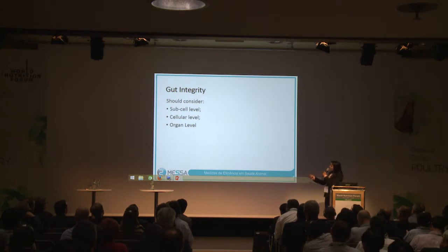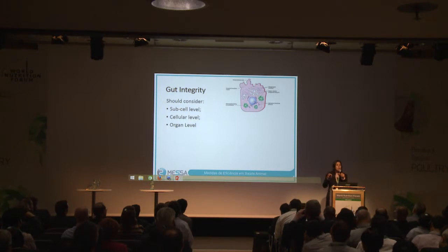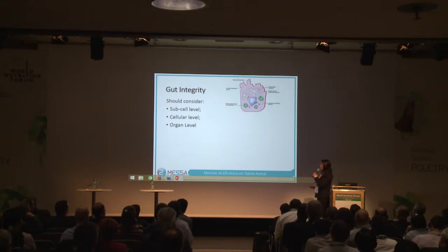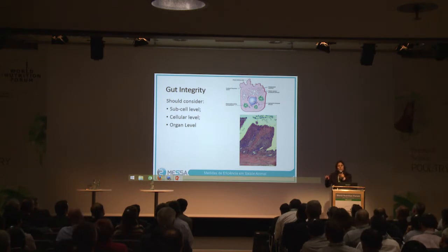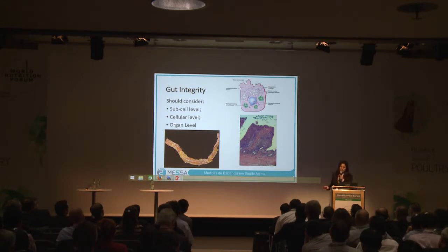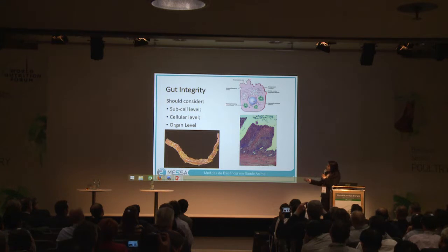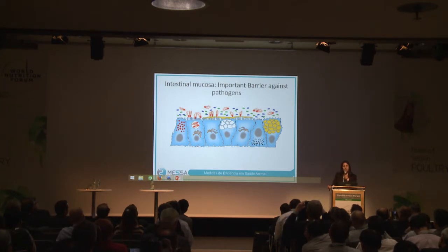When you talk about gut integrity, it's important to consider first the subcellular level. Today, a lot of speakers talked about what you will see inside the cells that will show if you have or not good integrity. Of course, when you change something at the intracellular level, the tissue will change. You have changes in the morphology of the digestive tract, and this will affect organ functions such as absorption and digestion. It's also important to mention the gut microbiota.